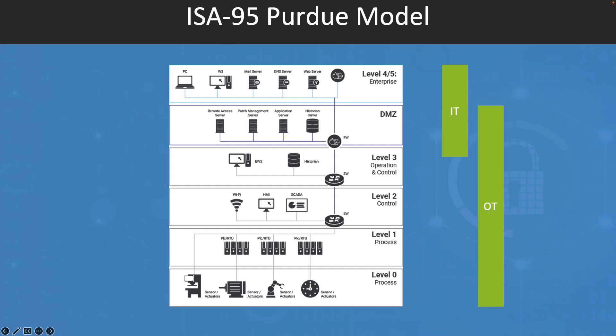Level 4, or business planning and logistics, involves higher-level business functions such as ERP, supply chain management, and business intelligence. Meanwhile, Level 5, or the enterprise level, is the topmost level that encompasses strategic planning and decision-making for the entire organization.